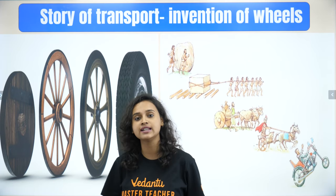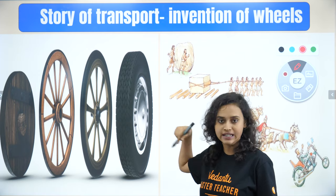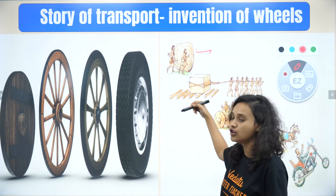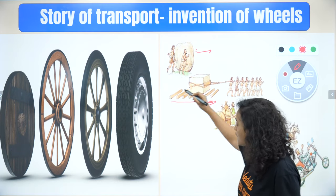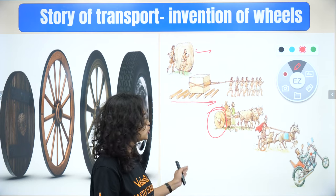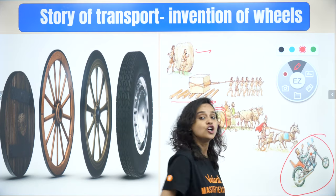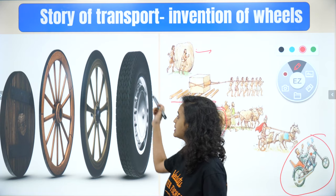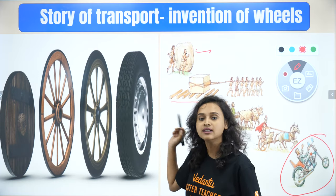Now let's understand the invention of the wheel. Early human beings realized that something that is rolling is easier to move. They put cylindrical logs below heavy objects to roll them — this was an easier way to transport things. From there they started making wood discs that could rotate, and over a very long time this evolved into the modern wheel we have today.